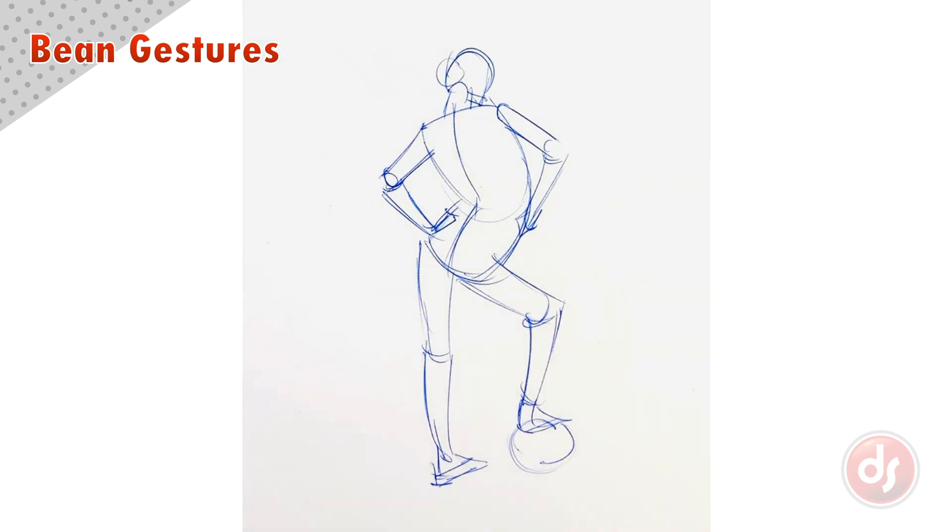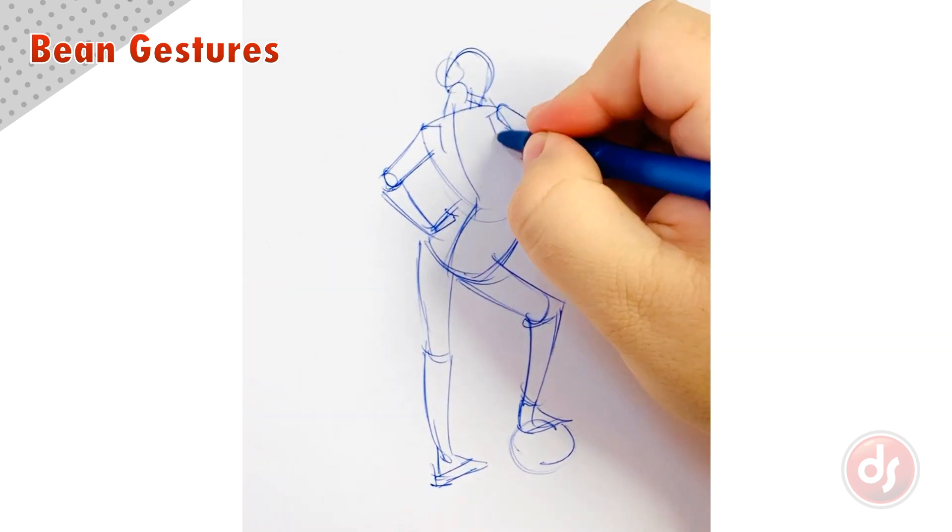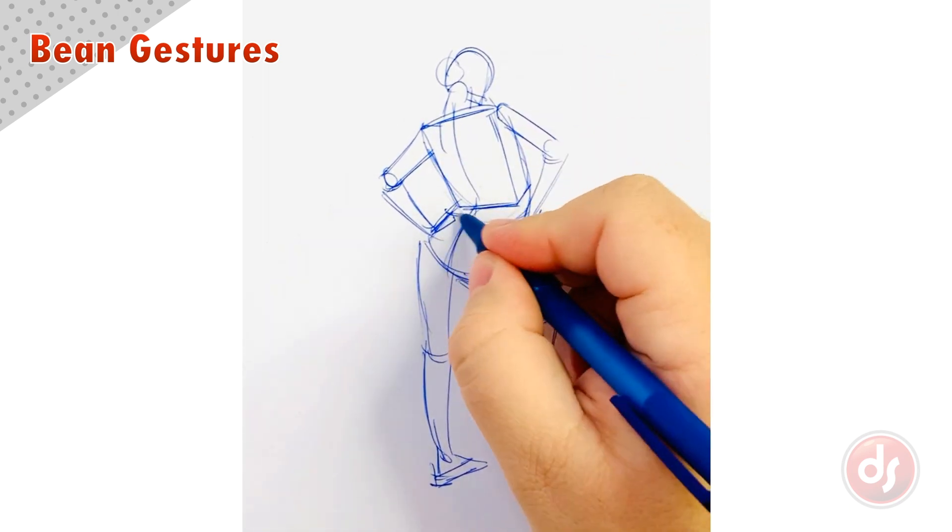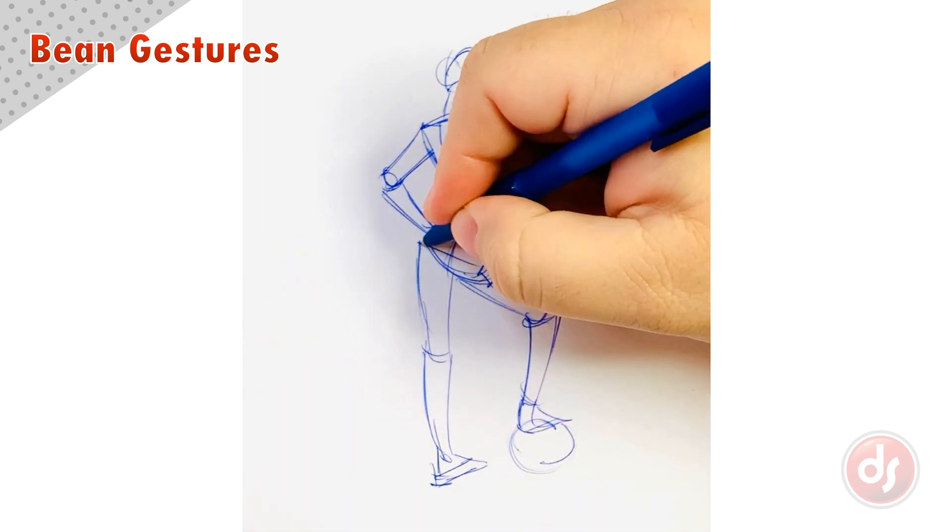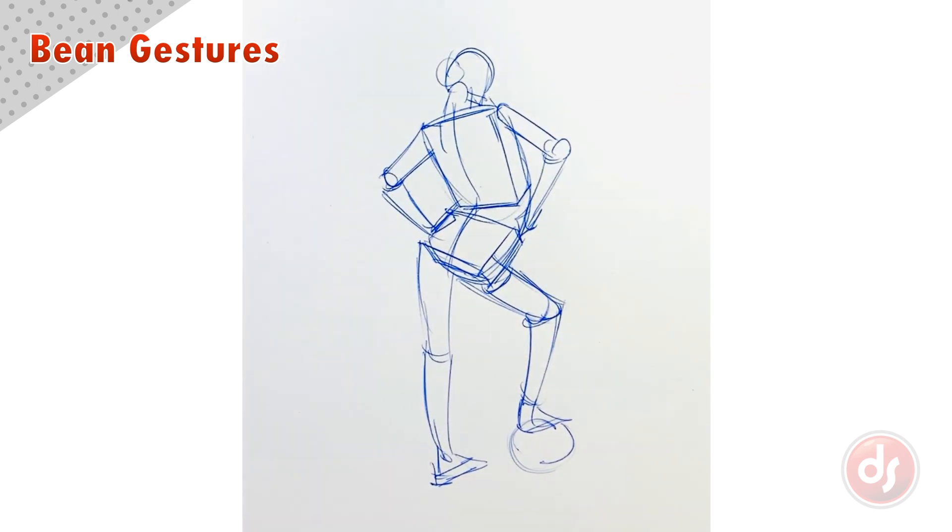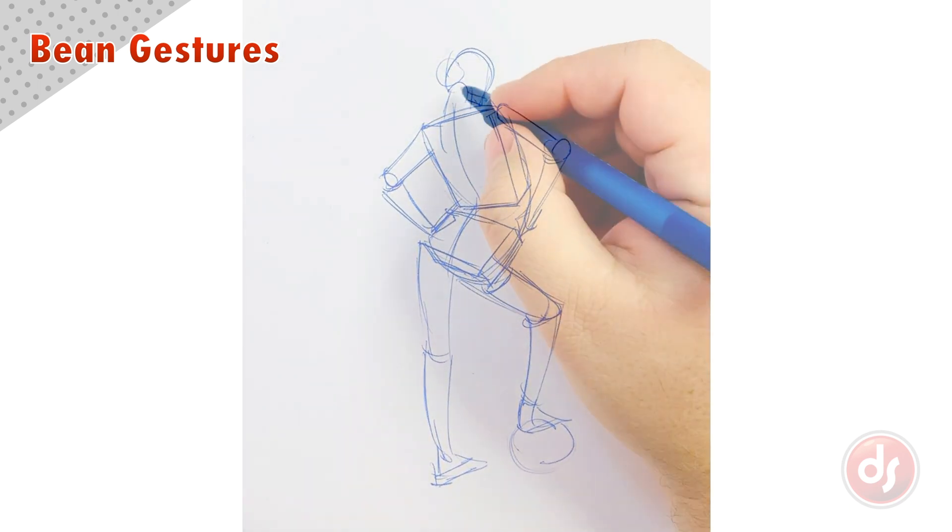Box forms can be a challenge to get correct. Many students will struggle with the boxes and skip that step and go straight for the details. But the more you practice this underlying structure, the better you will be able to describe thick three-dimensional bodies and your details will look even better.